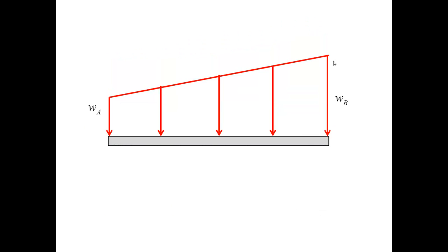I begin with drawing a free body diagram, which involves the distributed load and the reactions at the pin and at the roller. Now, to write the equilibrium equations, I need to convert the distributed load into a concentrated one. And to do so, I split the load into a triangular with the magnitude WB minus WA on the right end and the uniform load with the magnitude WA.